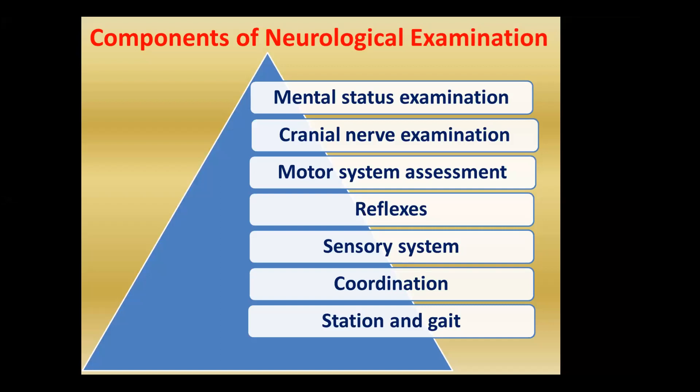Mental status examination is used to identify the status of the mind by asking questions. For cranial nerve examination, we have 12 pairs of cranial nerves and each is assessed by specific tests. Motor system assessment identifies any abnormality in the muscles.